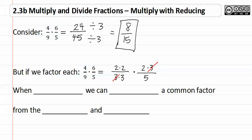We now have two times two times two which is eight, and three times five which is fifteen. So we still got the same answer of eight-fifteenths.